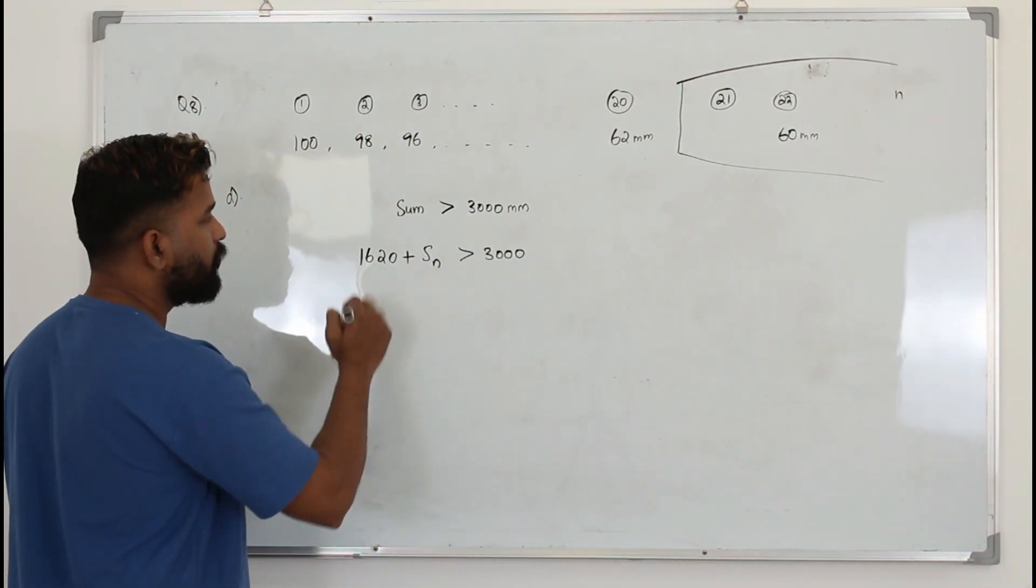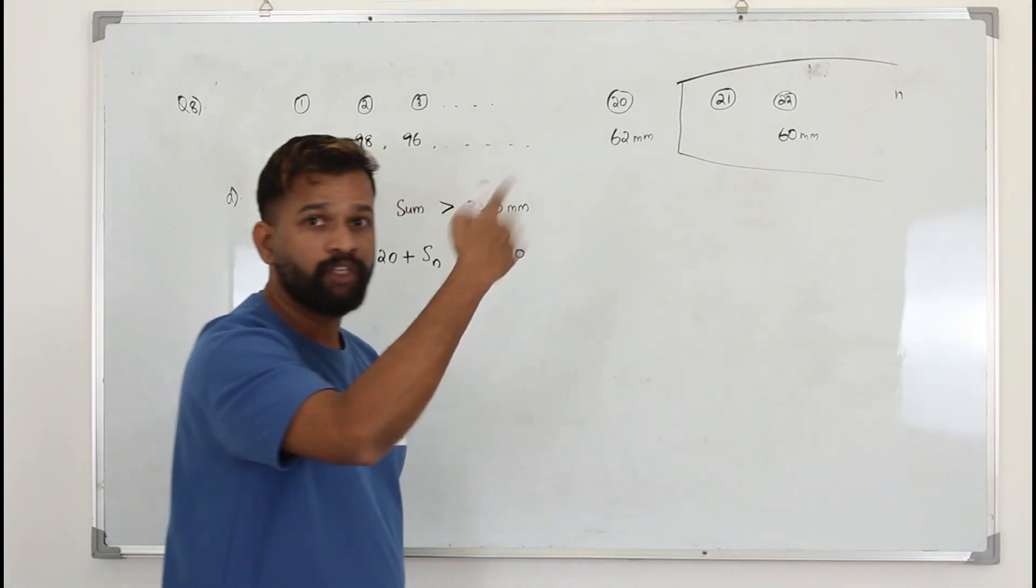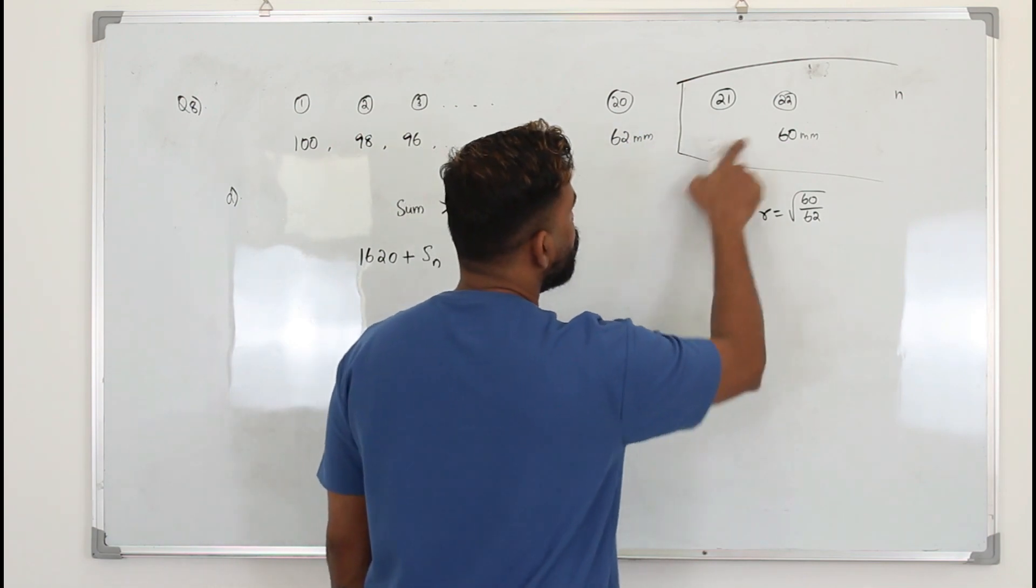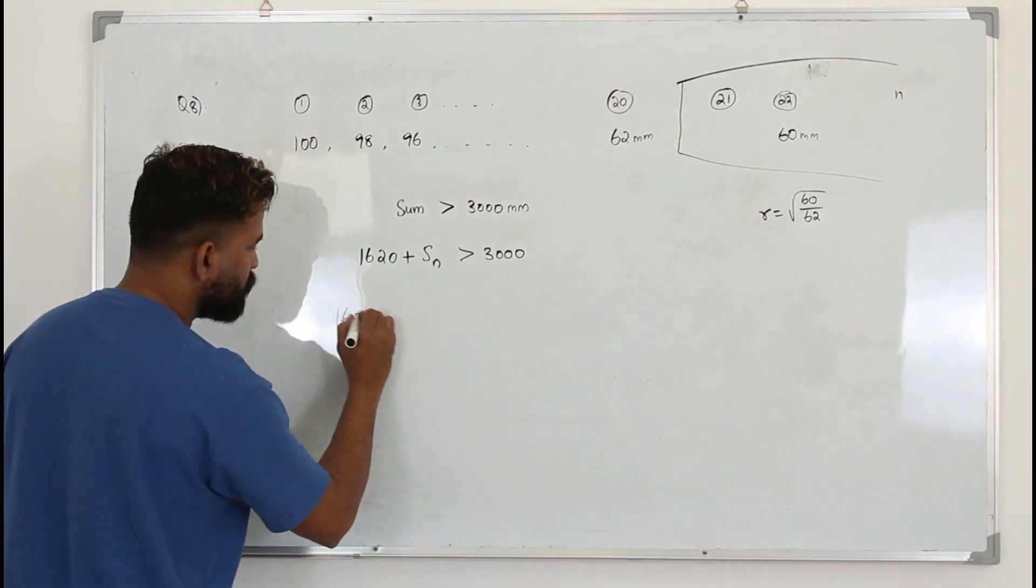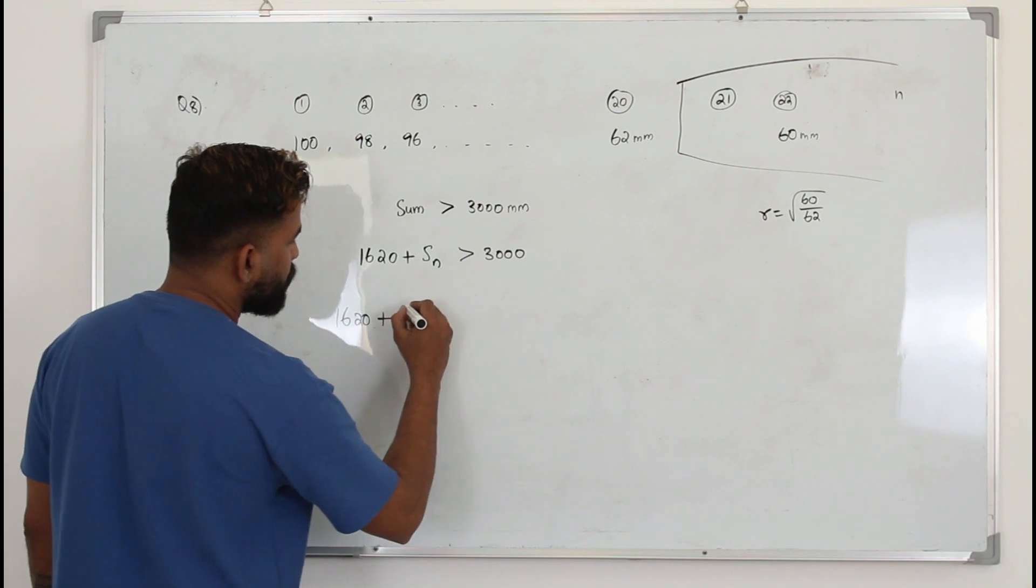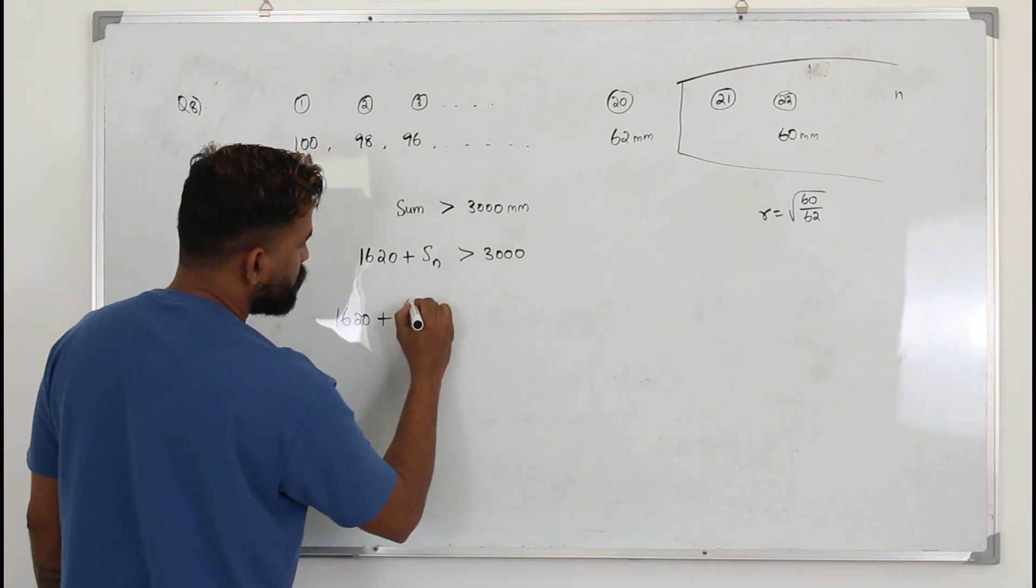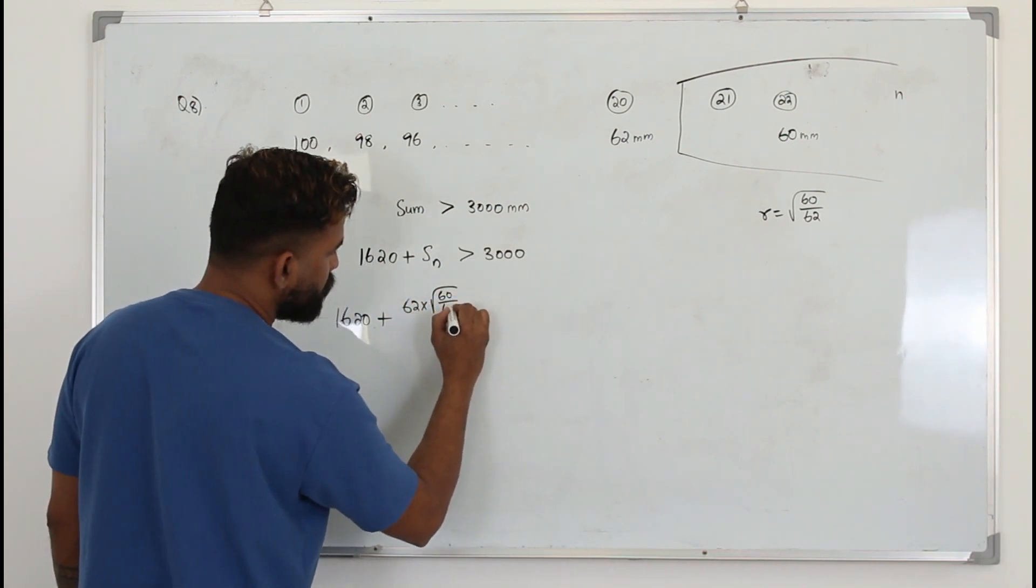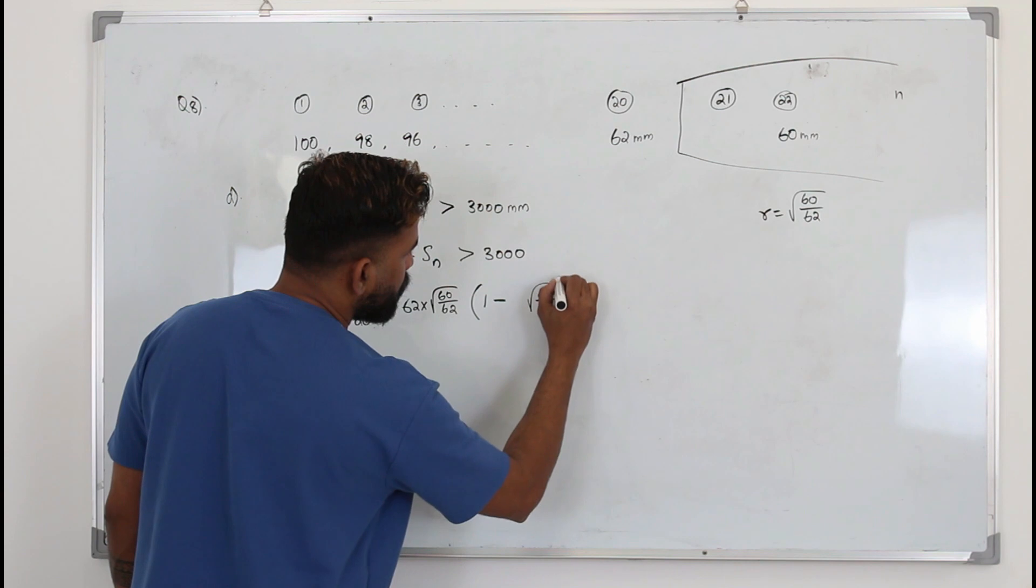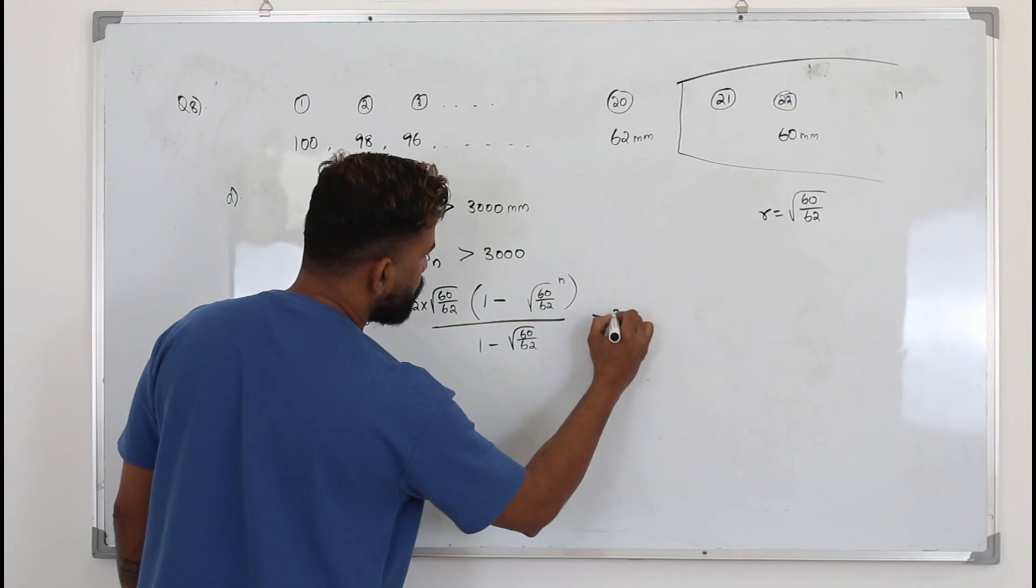To find the sum of the geometric part, you need to know the 21st term. The 20th term is 62 and it follows geometric sequence with r = sqrt(60/62), so 62 times r is the first term. So 1620 plus the sum of n terms, where a is 62·r, using the formula a(1 - r^n)/(1 - r), is greater than 3000.